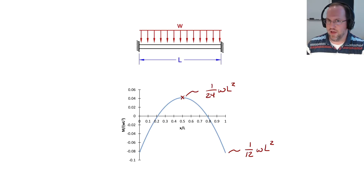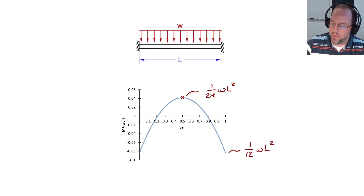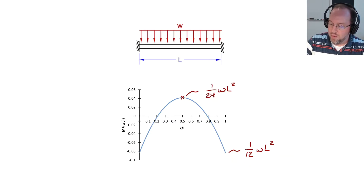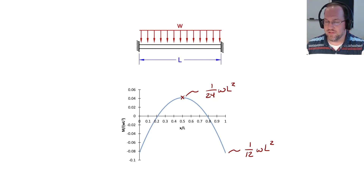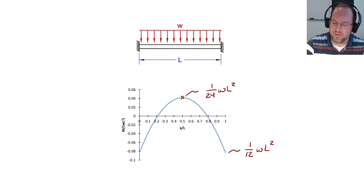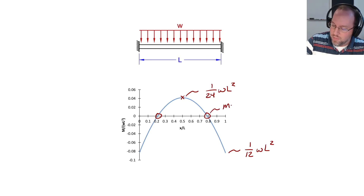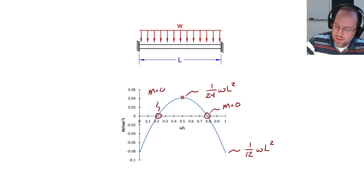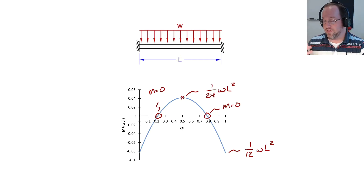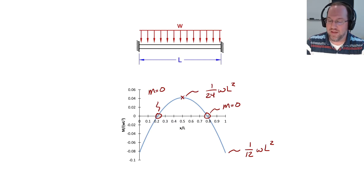Let's begin with this fixed-fixed beam. It's a well-known problem where we have negative moments at the two ends of 1/12 WL² and a positive moment at mid-span of 1/24 WL². For approximate analysis, we don't care about those exact moments — what we care about is the inflection points, which are the locations of zero moment. The key idea is that we can replace any inflection point with a hinge without changing the system.